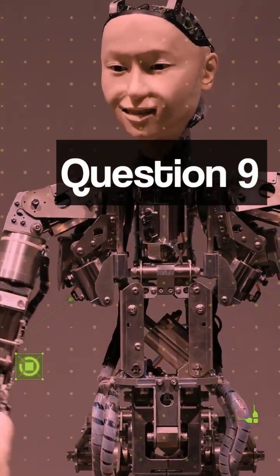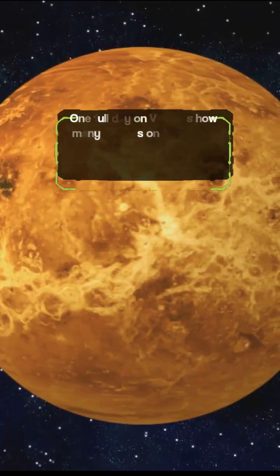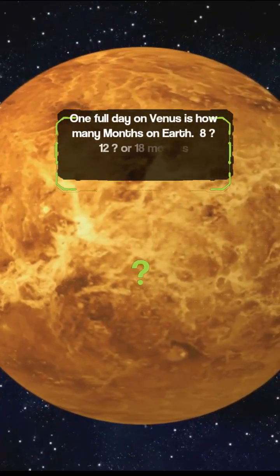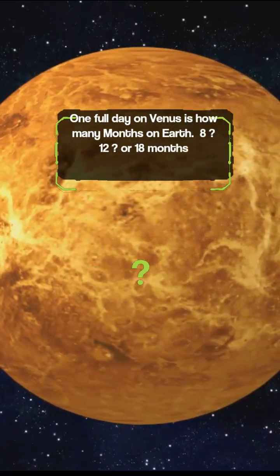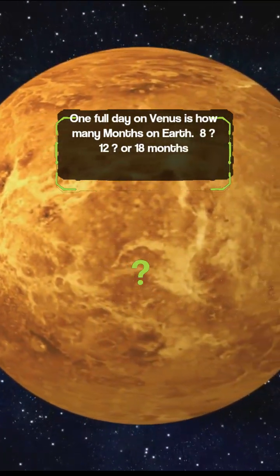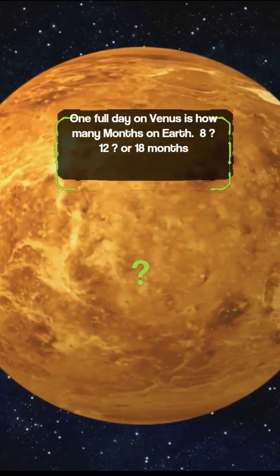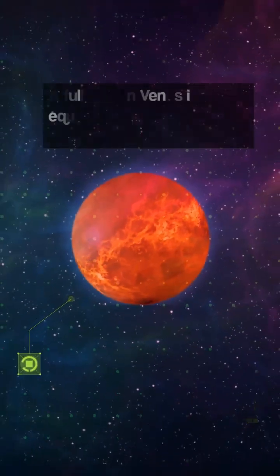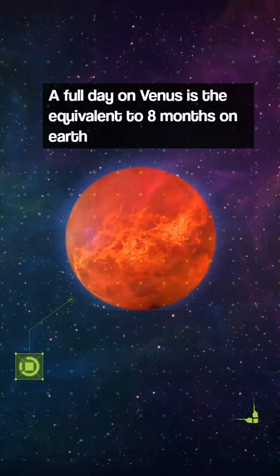Question 9. One full day on Venus is how many months on Earth? 8, 12, or 18 months? A full day on Venus is the equivalent to 8 months on Earth.